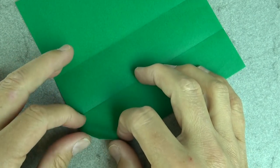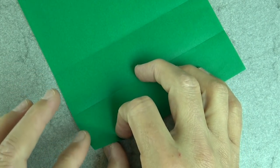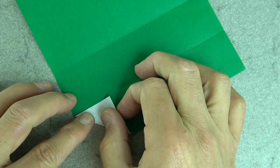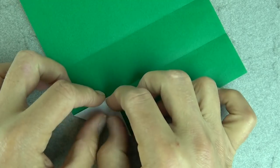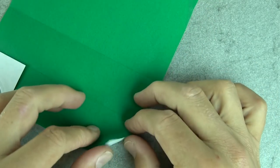And now fold the corner up so that this edge aligns with the crease. And repeat on this side.